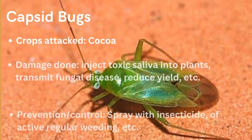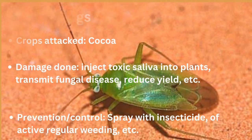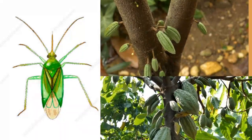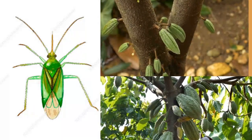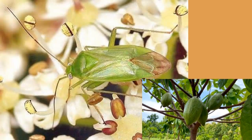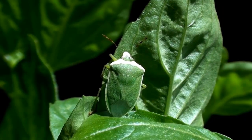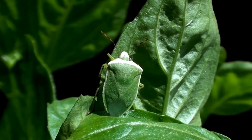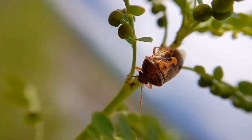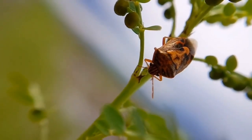The next pest is the capsid bug. Capsid bugs usually attack cocoa, a beverage crop. They inject toxic saliva into the plant, transmit fungal disease, reduce yield, and cause stunting of growth. The typical method of controlling them is by spraying the crop with an insecticide such as Gamalin 20, and also regular weeding. Capsid bug is an example of a piercing and sucking insect crop pest, as is the plant louse.